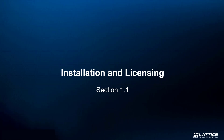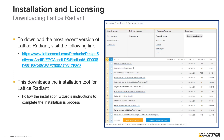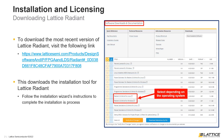To download Lattice Radiant, visit the following link and scroll down to the section called Software Downloads and Documentation. From the list of files in that section, locate the installation link for the most recent version of Radiant. There are two files for installing Radiant 3.0, and users should select the download link that matches their computer's operating system.